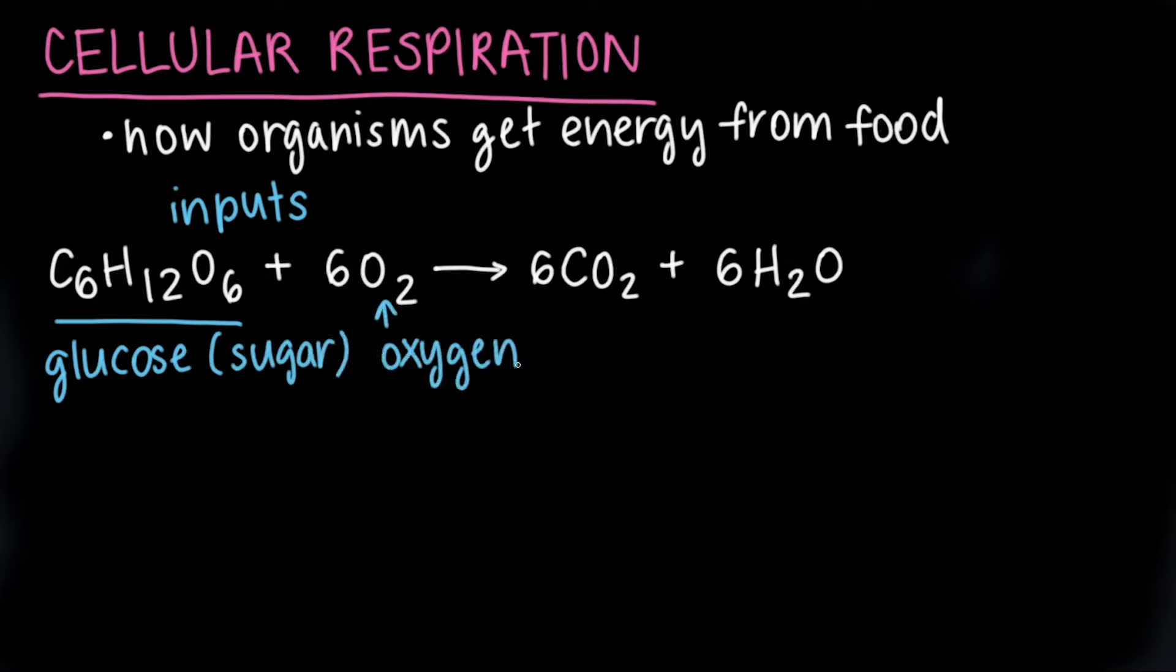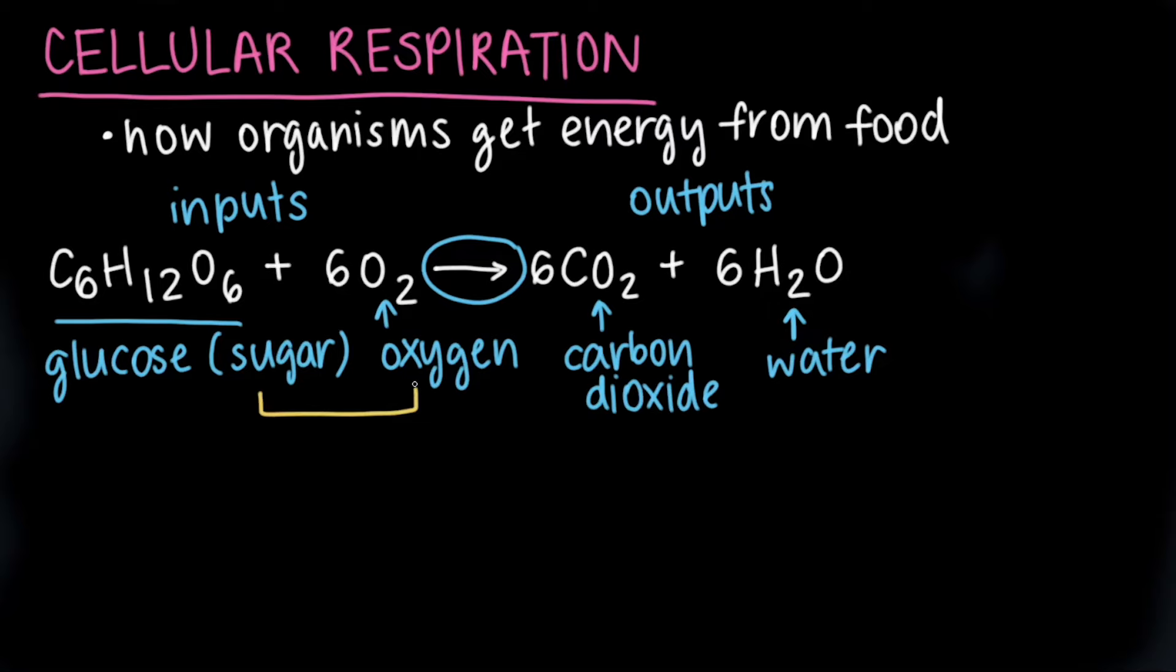Glucose comes from our food, and oxygen comes from the air we breathe. The right side of this equation shows the outputs, carbon dioxide and water. The arrow in the middle shows that during the process of cellular respiration, glucose and oxygen molecules are broken apart, and their atoms are rearranged to eventually form carbon dioxide and water.